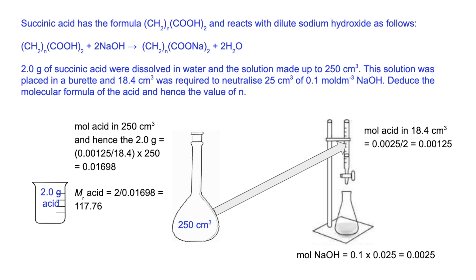Now we know the MR of the acid, we can subtract the MR of the two COOH groups, which is 90. So that comes out of the (CH₂)ₙ part, having a mass of 27.76. The MR of CH₂ is 14, so if we divide that by 14, we obviously get a value of 2 for n.